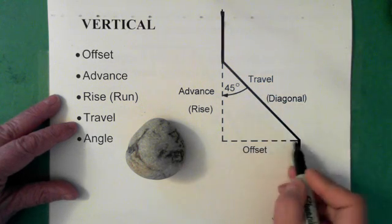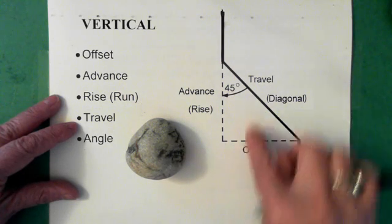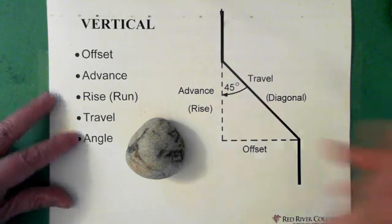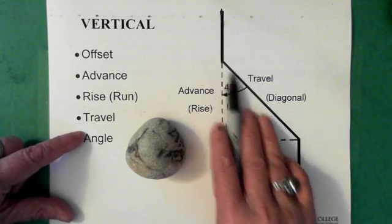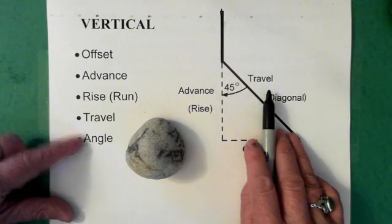So our offsets here and here, we're dealing with a right angle triangle. Offsets here and the angle is across from the offset. And this diagonal piece is called the travel.